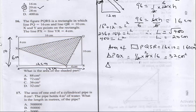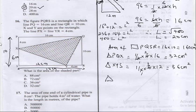Triangle XYS equals half times base 6 times height 12, giving us 36 cm squared. The last triangle, triangle PQRY, will be half times 10 times 4, which is 20 cm squared.